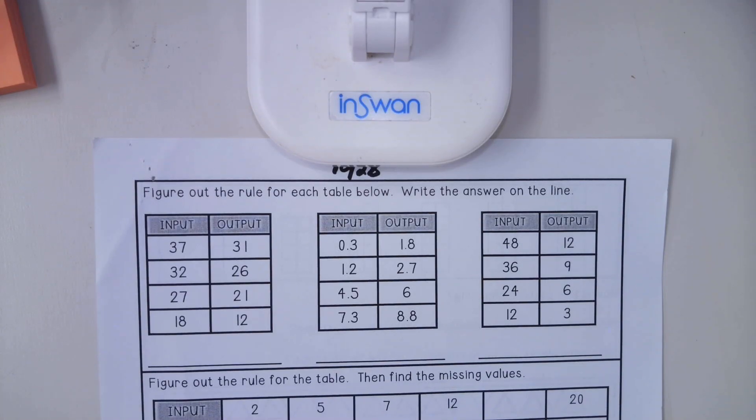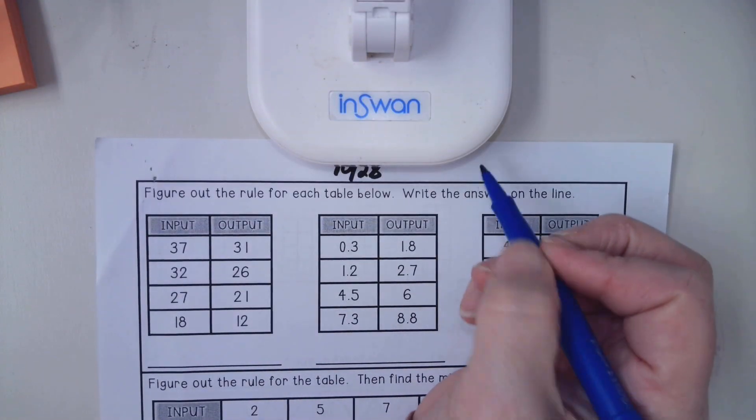Hi, good afternoon everybody. This is homework help for October 28th, Tuesday. So we're continuing to work with in and out tables. I'm going to pick the second table on the top to work on first.